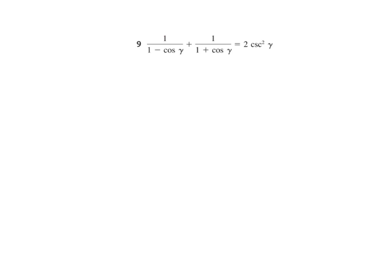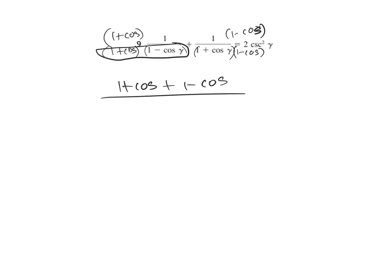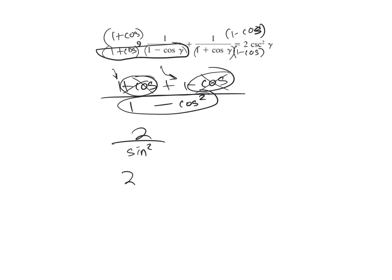Get a common denominator on the left and notice the difference of squares. On the top, 1 plus cosine plus 1 minus cosine all over a difference of squares denominator. A plus B times A minus B gives A squared minus B squared. So A squared is 1, B squared is cosine squared, with a minus sign between. The cosines cancel, leaving 1 plus 1, giving 2 on top. On the bottom, 1 minus cosine squared is sine squared, so we have 2 over sine squared, which is 2 cosecant squared.